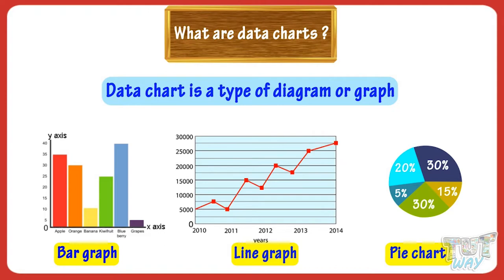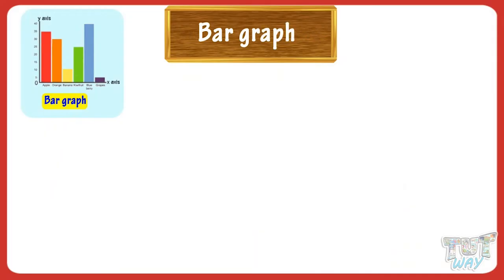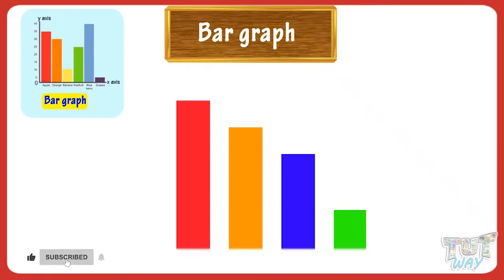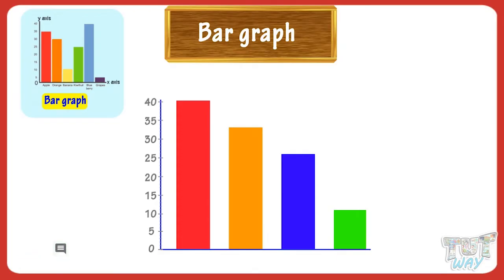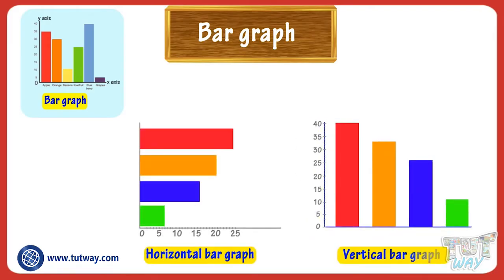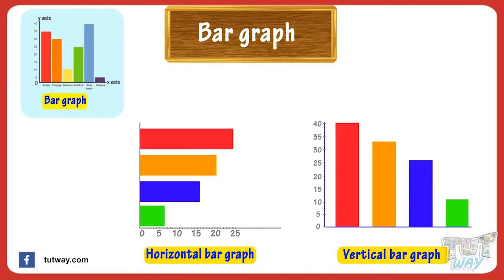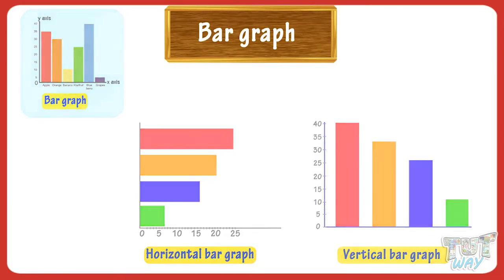Today we will learn what are bar graphs. A bar chart is a chart with rectangular bars where the length of bars represent the value of something. There is a scale along the length of bars which is used to measure them. The bars can be plotted horizontally or vertically. Bar graphs are used to compare the values of given items at any given point of time.